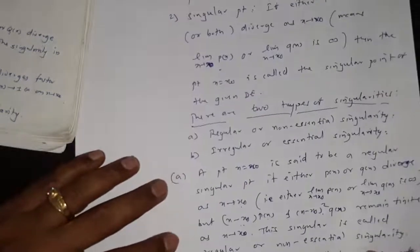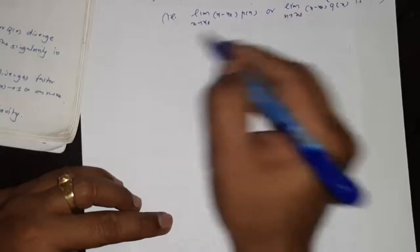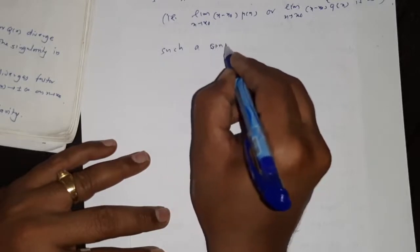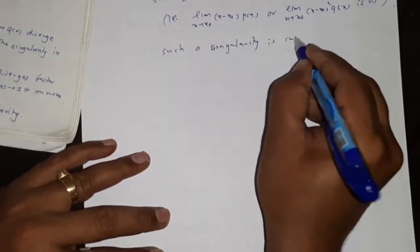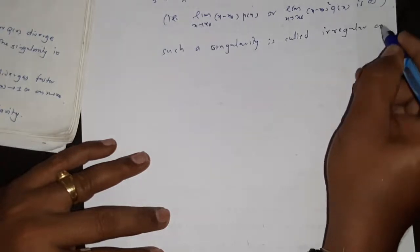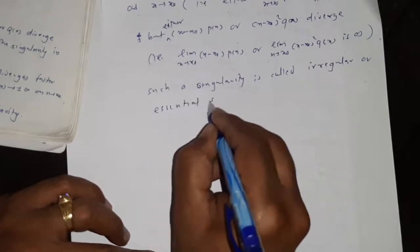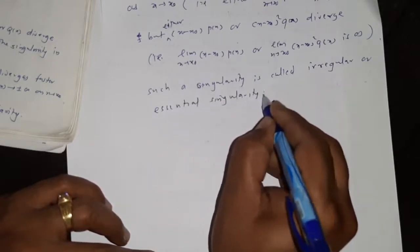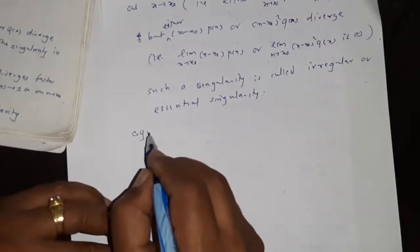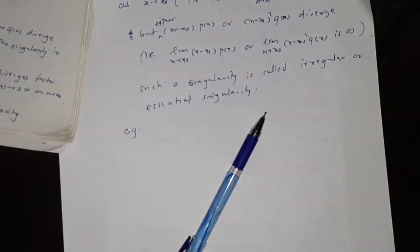Such a singularity is called an essential singularity or irregular singularity. In the next lecture we will see examples of singular and ordinary points.